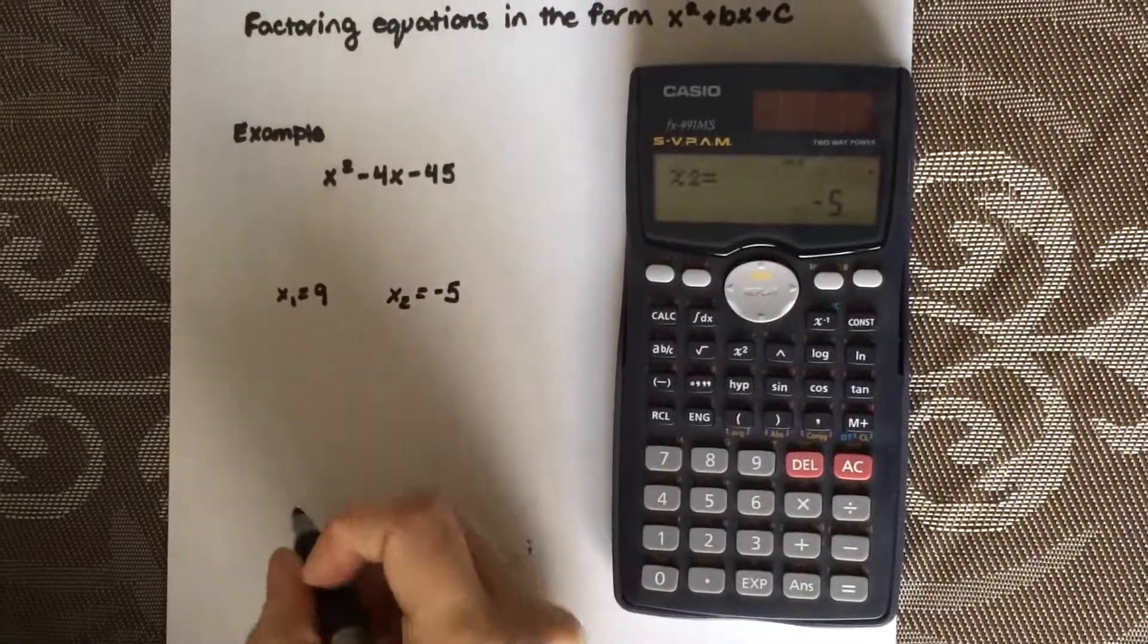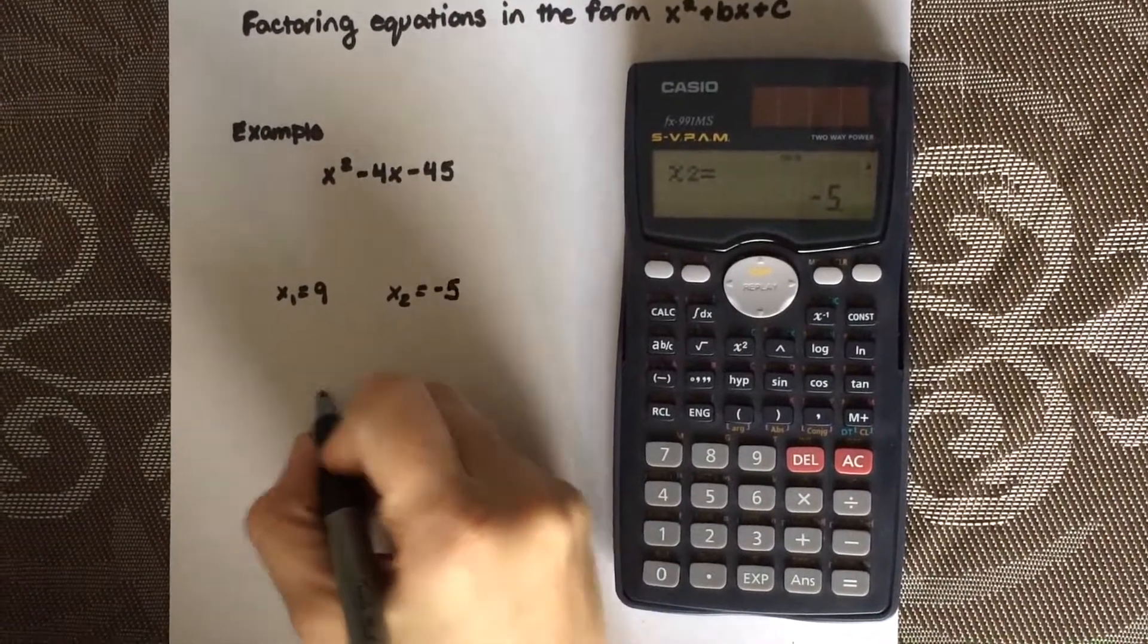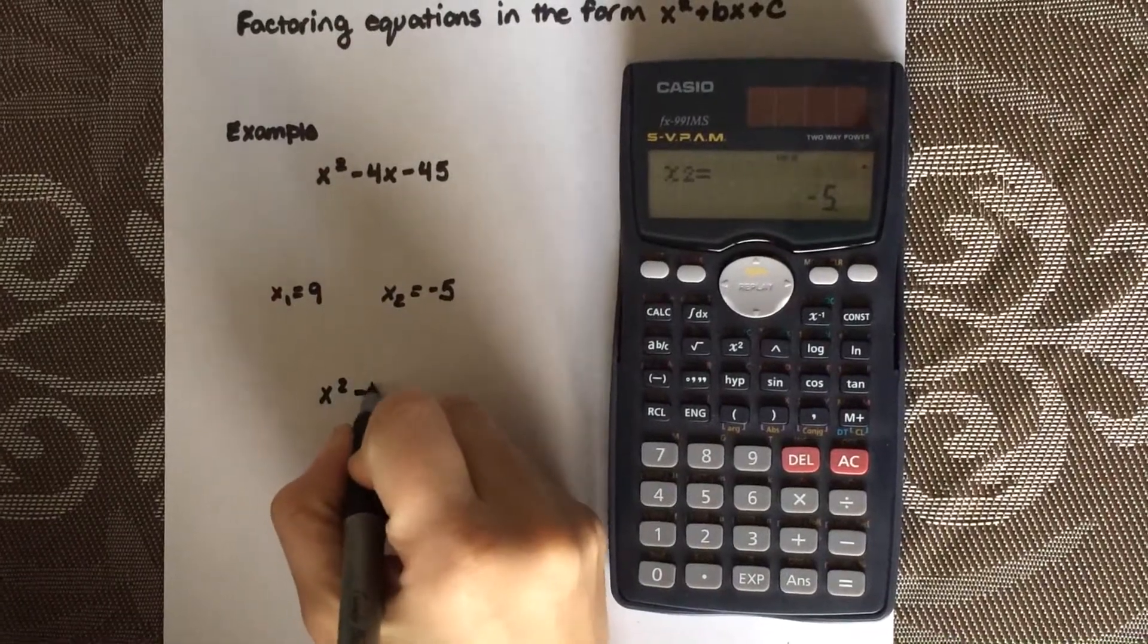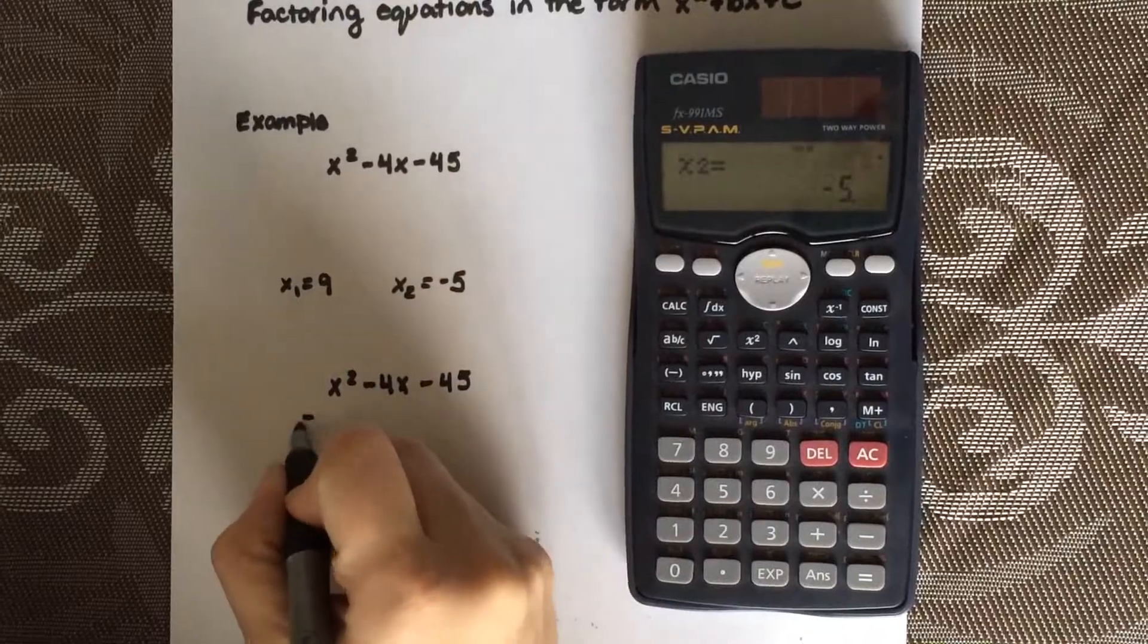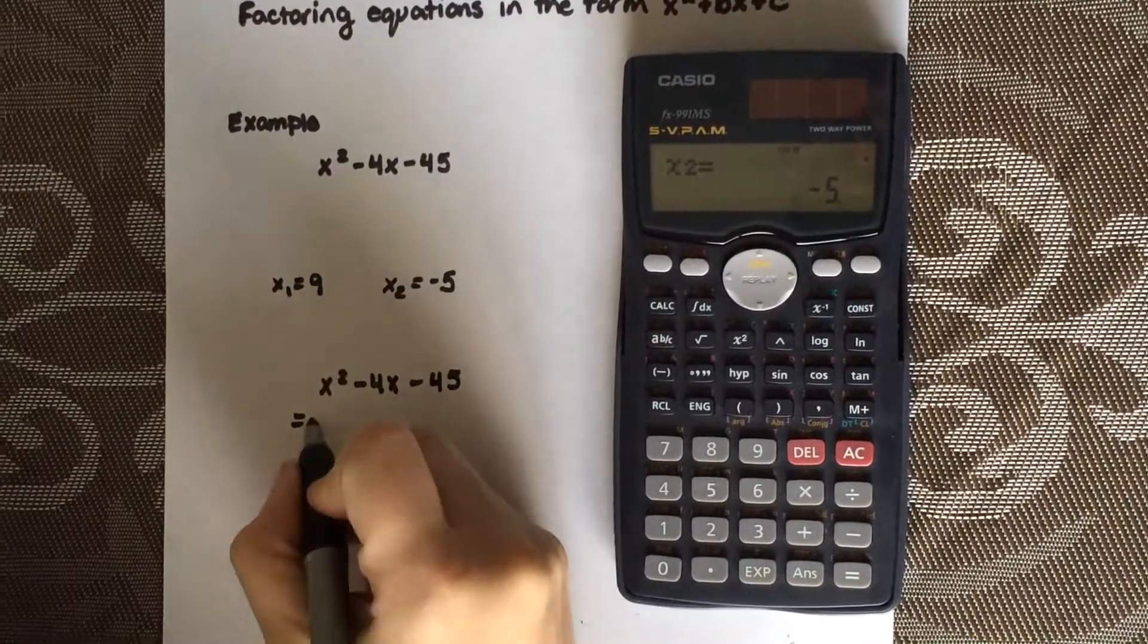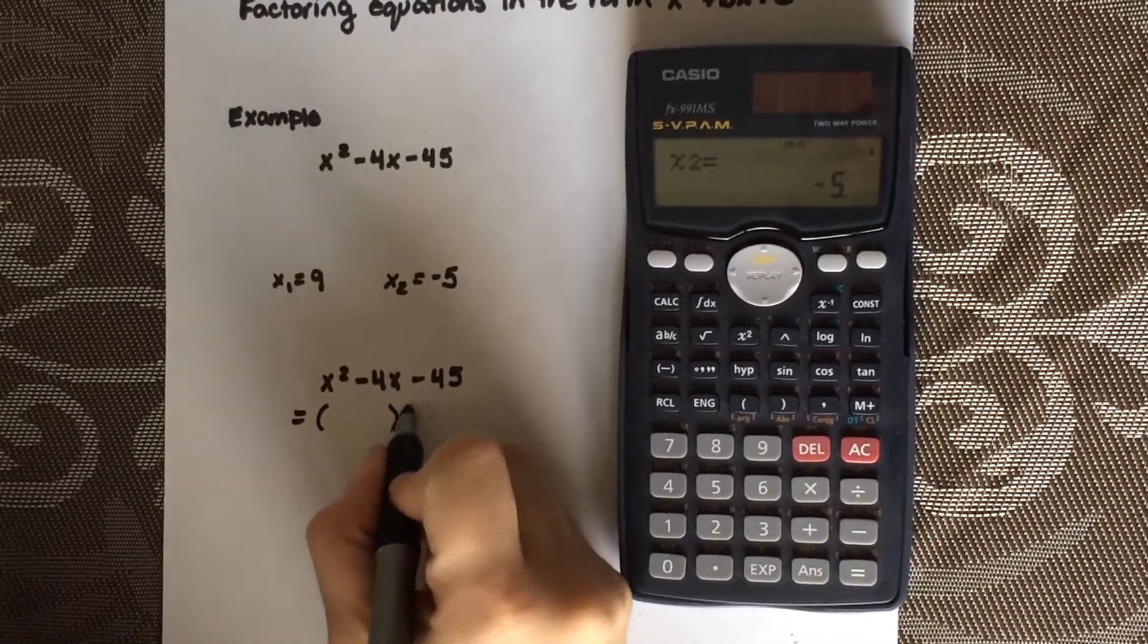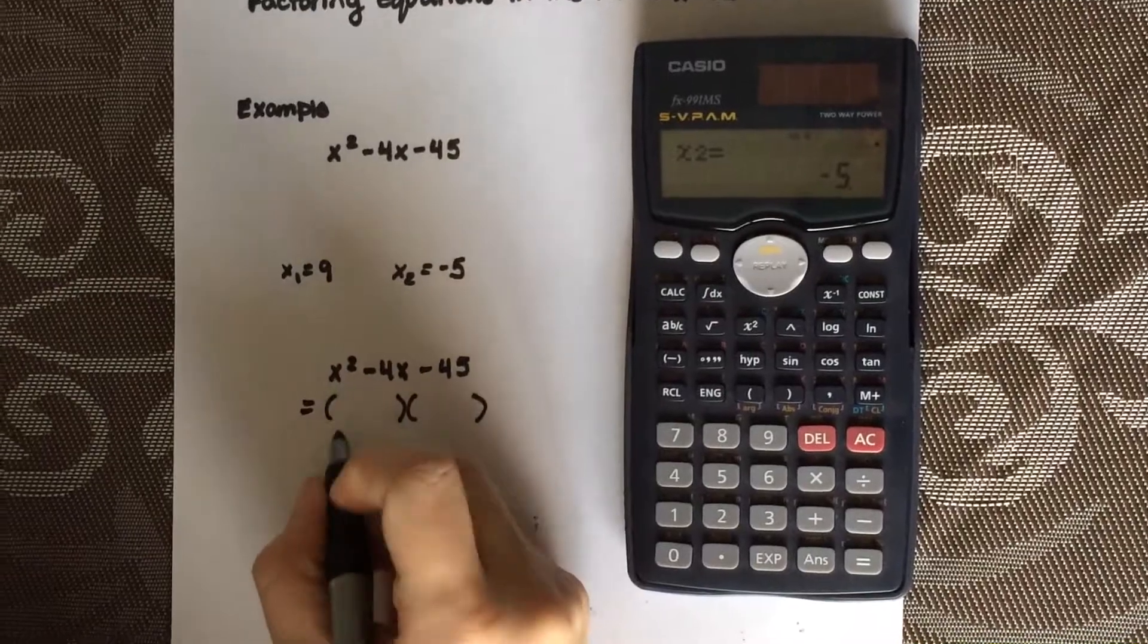So what you're going to do now to factor that. I'm going to rewrite the equation. You're going to use the opposite signs when factoring, so you have two brackets, your variable x.